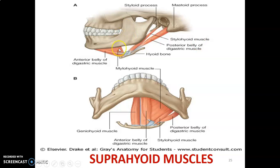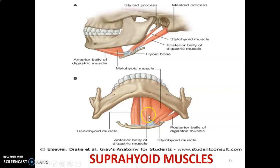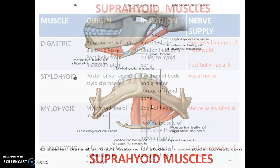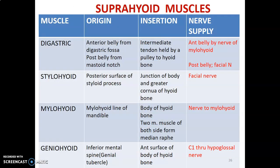The submandibular triangle lies between the anterior and posterior belly of the digastric. The submental triangle lies between the anterior bellies of the digastric on each side. This image also shows the suprahyoid muscles — muscles located above the hyoid bone — including stylohyoid from the styloid process to the hyoid, the digastric muscle with anterior and posterior belly, and the geniohyoid muscle from the mental spine of the mandible to the hyoid bone. Mylohyoid runs from the mylohyoid line of the mandible to the median raphe.